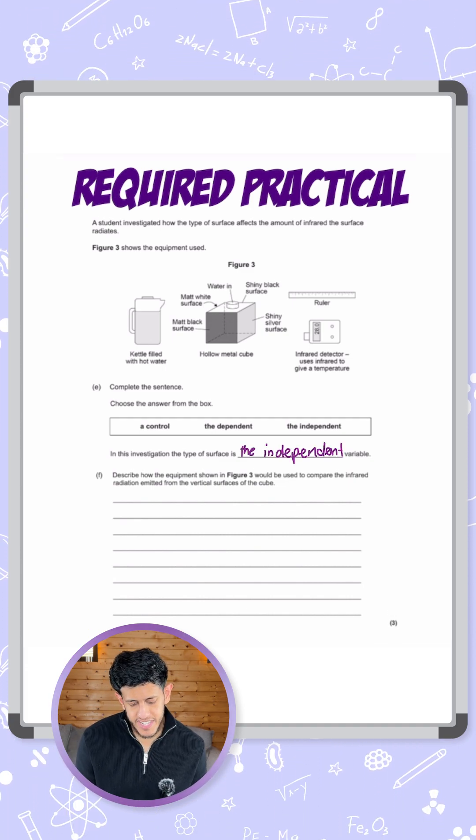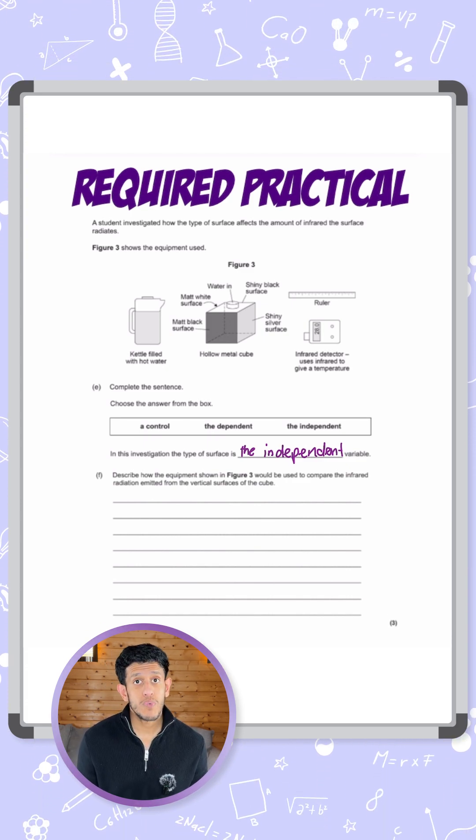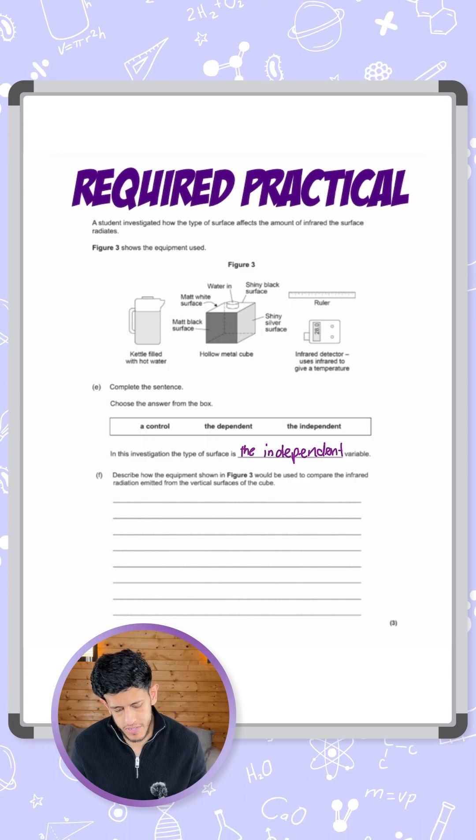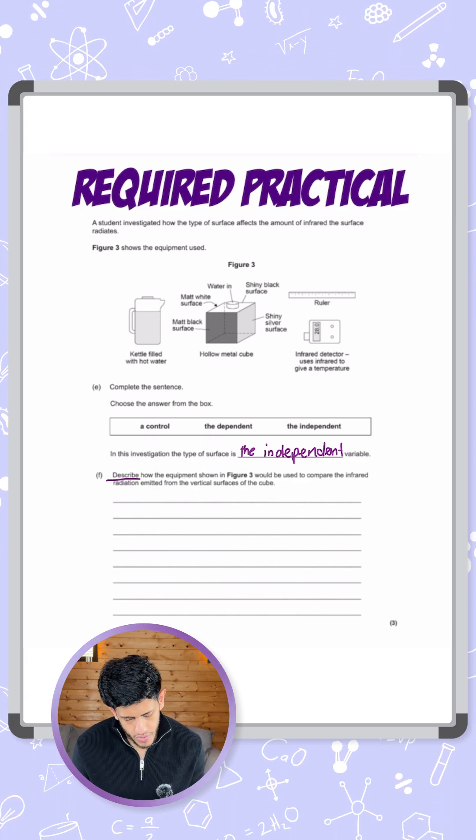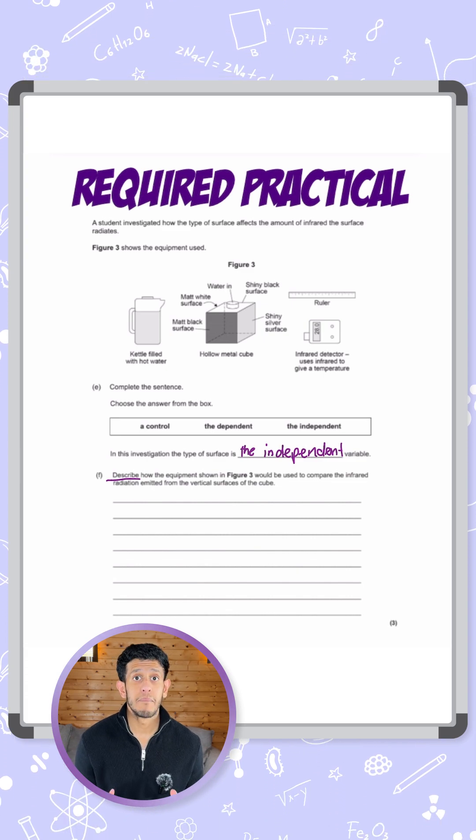Now let's take a look at the second question. It says describe how the equipment shown in Figure 3 would be used to compare the infrared radiation emitted from the vertical surfaces of the cube. Now it's for three marks, and it's asking us to describe not explain what happens as a result, so we don't need to talk about the results. This is simply about the method.